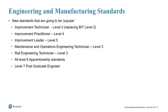New standards expected to see high take-up include the Improvement Technician at Level 3, which replaces the Business Improvement Techniques Level 2 course, escalating to Improvement Practitioner at Level 4 and Improvement Leader at Level 5. The Maintenance and Operations Engineering Technician — MOET — at Level 3, and the Rail Engineering Technician at Level 3 are also expected to be popular, along with all Level 6 apprenticeship standards and the Level 7 postgraduate engineering standards.